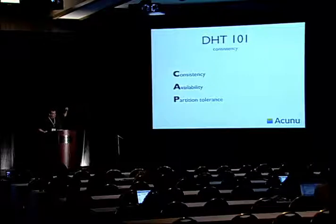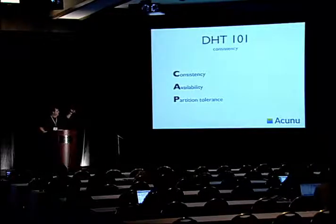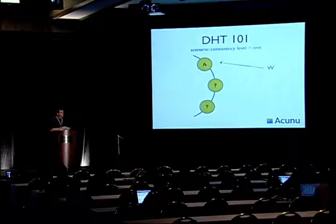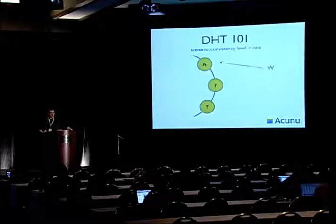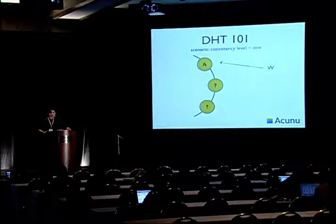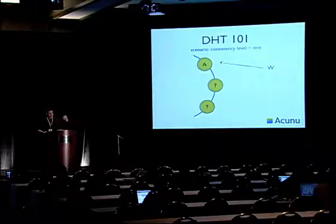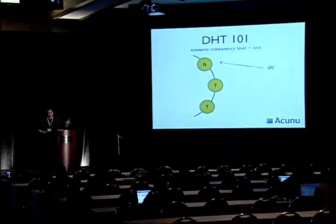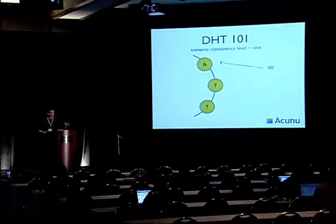Usually someone will say 'pick two' — at any given instance in time you can only have guarantees on two of these properties. But what we do in Cassandra is what's called tunable consistency. If you've read the Dynamo white paper, this is very similar to what they do there as well. Assuming we have three copies, we can decide on a per-operation basis how much of that replication should be synchronous or asynchronous, letting you trade off between consistency and availability.